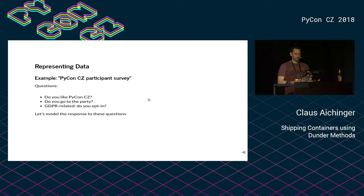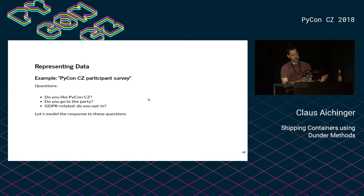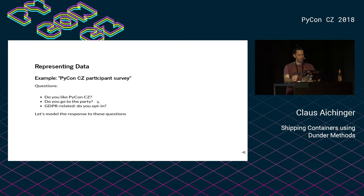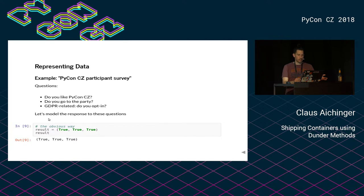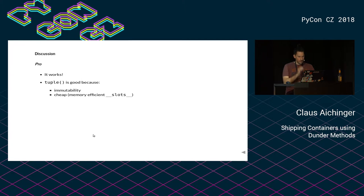Let's come to the first example. Let's say you are a PyCon CZ organizer and you want to ask some questions to your prospective participants. You make a survey — in our case it's a very short survey. First, whether you like PyCon CZ. Then, do you go to the party tomorrow? And of course a very hot topic these days: GDPR — maybe you want to opt in because you want to receive emails for PyCon CZ 2019.